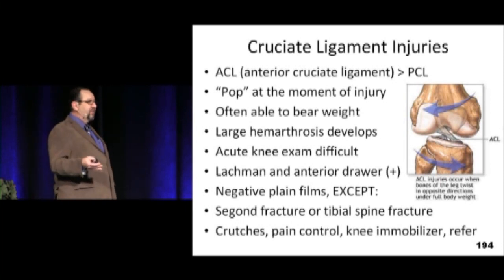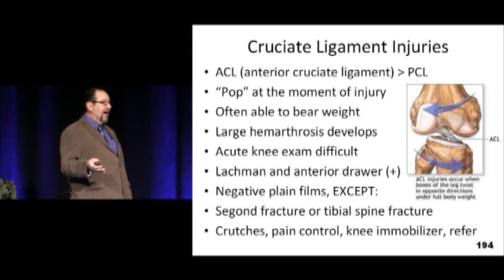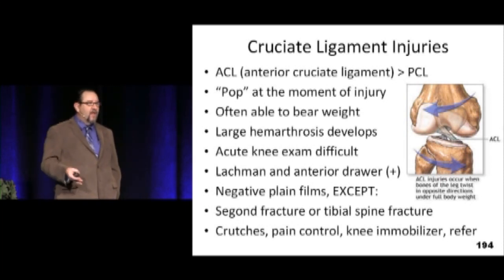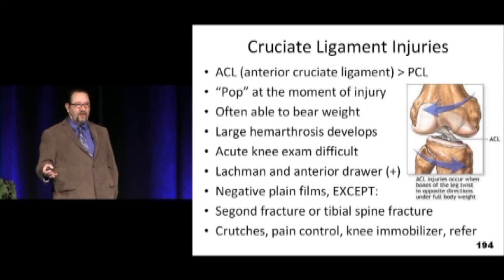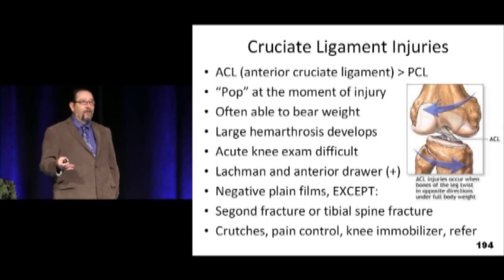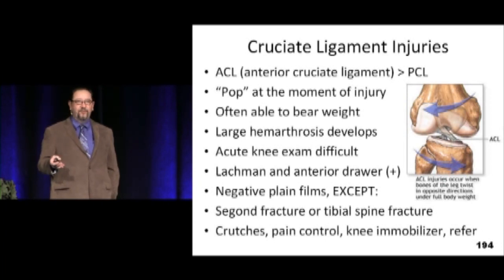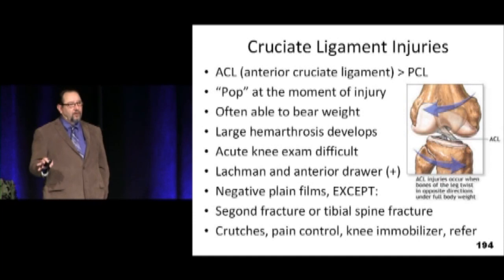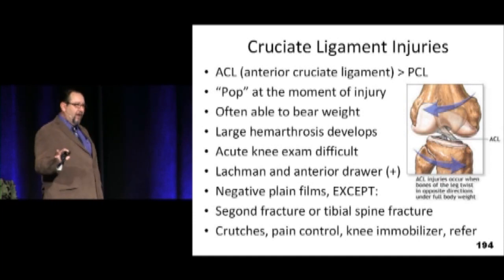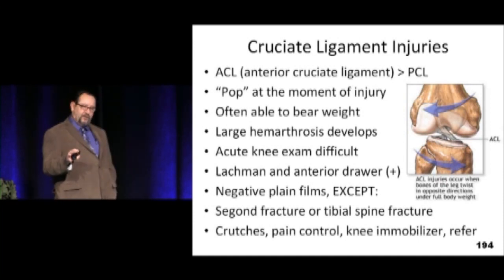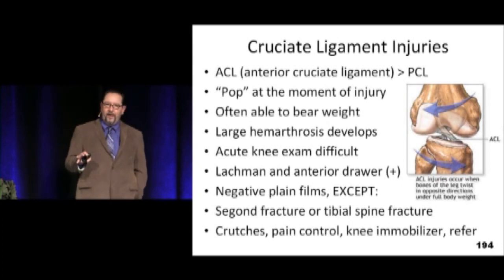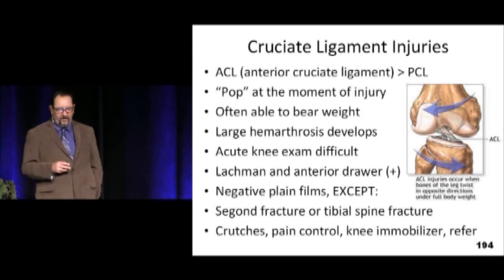When you see an acute knee with negative x-rays but obvious soft tissue injury, the more accurate term is internal derangement of the knee — it needs further workup to sort out what's wrong, but for now it's just an internal derangement with several things out.